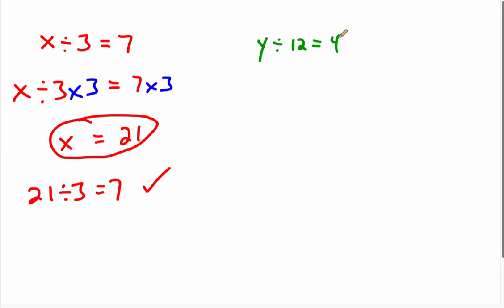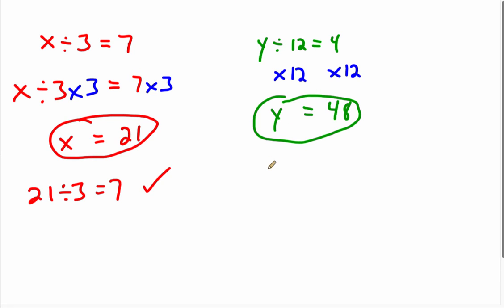Let's try y divided by twelve equals four. We can multiply both sides by twelve, because since the variable is being divided by twelve, multiplying by twelve counteracts that. That leaves us with y on the left side, and four times twelve is forty-eight. We'll double-check by plugging it back into the original: forty-eight divided by twelve equals four. So y equals forty-eight is correct.